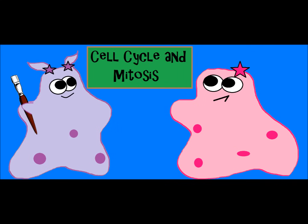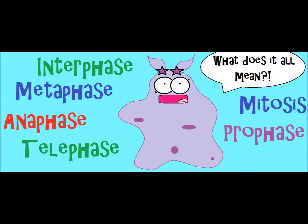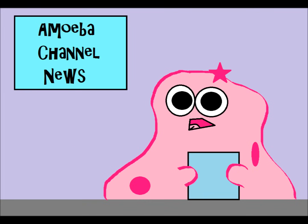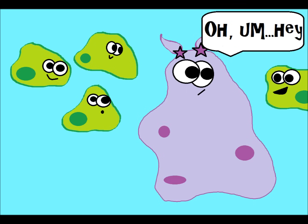Today's topic is the cell cycle and mitosis. But before we get into the cell cycle and mitosis, we want to make sure and talk about why these words are important and how they relate to real life. If I say the word cancer, this word probably means something to you. Either you know somebody who's been diagnosed with cancer or you've heard about it on the news. There are many different types of cancers, but one thing they all have in common is that they are caused by uncontrolled cell growth.